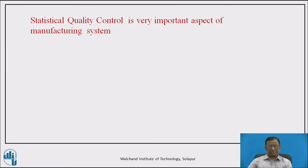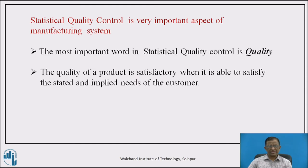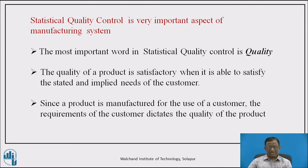Statistical Quality Control, called SQC, is one of the very important aspects of a manufacturing system. The most important word here is quality. The quality of a product is considered satisfactory when it is able to satisfy the stated and implied needs of the customer. The customer dictates the quality norms and requirements, since the product is manufactured for the customer. Manufacturing parts must always maintain quality as per the required norms, and this aspect is handled by SQC techniques.